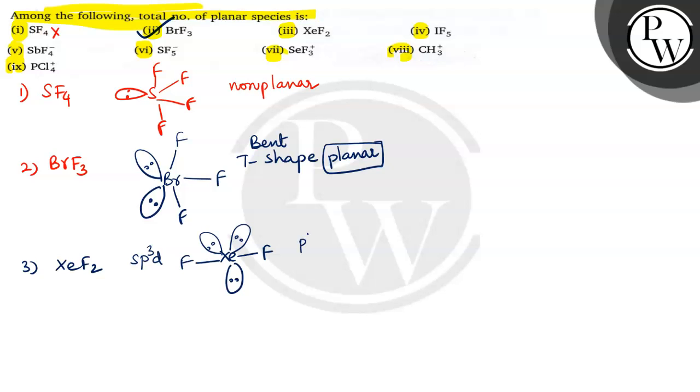And number 4 with this IF5. It is also interhalogen compound of AX5. So AX5 and it goes SP3D2 hybridization. And this is I with five fluorines and this is lone pair. So this is square pyramidal. So square pyramidal is not a planar. This is non-planar.